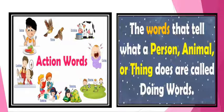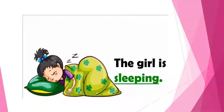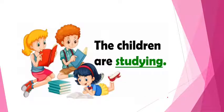Now let us see some examples. In this picture, what is the boy doing? The boy is eating food. In this sentence, I have highlighted the word 'eating' with green color because this is the action being done by the boy. Similarly, what is the girl doing? The girl is sleeping. Again, the word 'sleeping' is in green color to show the action being done by the girl.